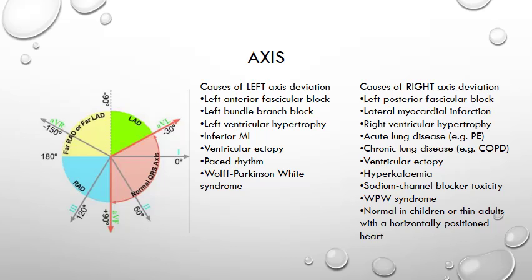Axis. Is it normal — so between minus 30 degrees to plus 90 degrees? Is it a left axis, less than minus 30 degrees? Or a right axis, more than plus 90 degrees? Don't get too worried about axis deviation; it's a nice to know and not a need to know. You can see some of the causes listed here for both left and right axis. I may post a separate video blog just on axis deviation and explain it in simple terms, which you may find useful or even have an epiphany.